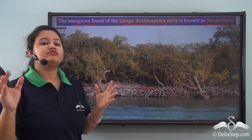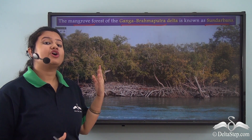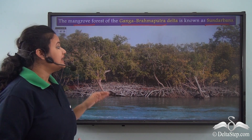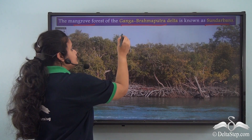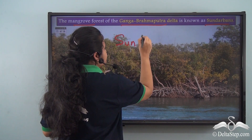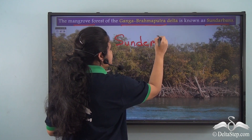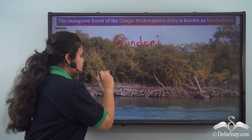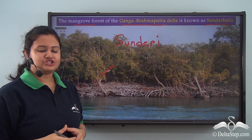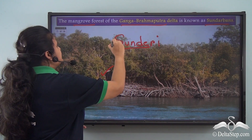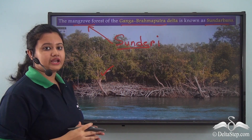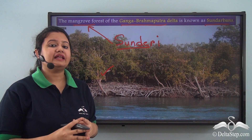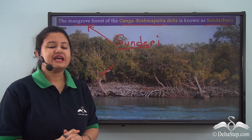The Sundarbans region has been named after the Sundari tree that is abundantly found in this forest. The Sundari tree is an example of a mangrove tree. Unlike other ordinary trees, mangrove trees are very special and they have some unique features.